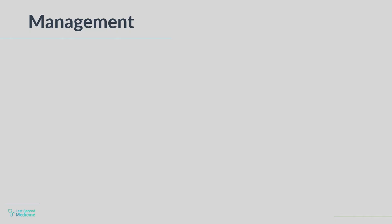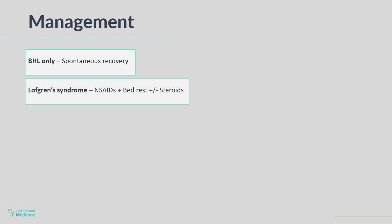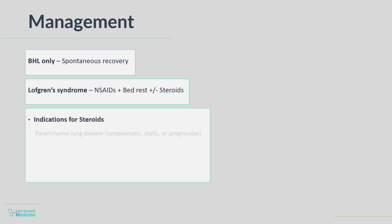Patients with bilateral hilar lymphadenopathy alone do not need treatment, as most recover spontaneously. Acute sarcoidosis or Lofgren's syndrome is managed with bed rest and NSAIDs; rarely, a short course of steroids may be needed. Indications for corticosteroids include parenchymal lung disease (whether symptomatic, static, or progressive), uveitis, hypercalcemia, and neurological or cardiac involvement. Prednisolone at 40 mg per day orally is given for 4–6 weeks, then the dose is reduced over 1 year according to clinical status.